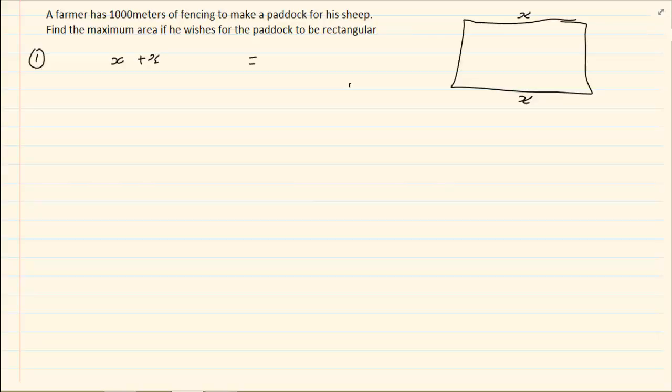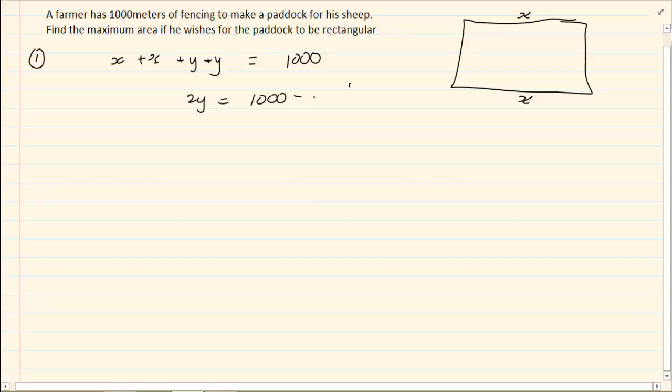Do you understand that? Because I have a y and a y. So, I have 2y is equal to a thousand minus 2x. Why am I saying y and y? Because they're equal. The two sides are equal. So, I want to solve for y alone. y is equal to a thousand minus 2x divided by 2. So, y is equal to 500 minus x.